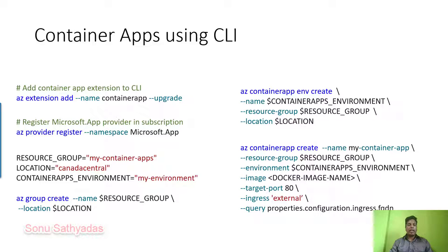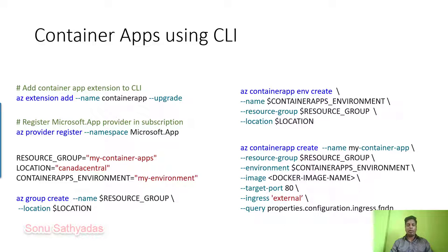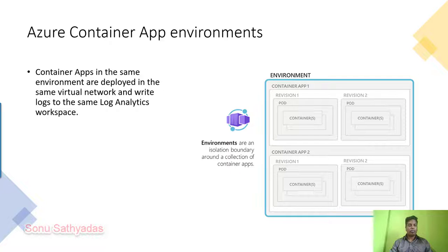Inside the container app, you can deploy using the az containerapp create command. You need to specify the name, resource group, and the container app environment name, along with the Docker image you are planning to deploy. You can specify the target port number for connecting to your application and what kind of ingress needs to be deployed — you can say 'external' to make it publicly accessible.